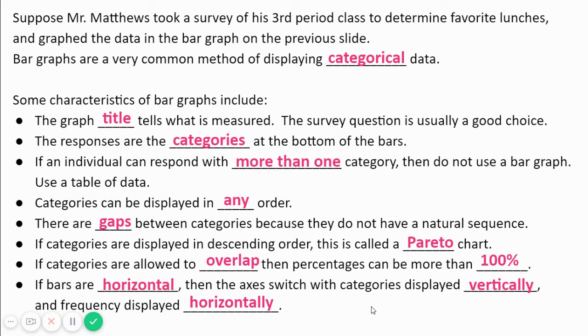If your categories are allowed to overlap, lots of people do it. Sometimes it's appropriate. Usually, there's a better way to present your data. Then your percentages might add to more than a hundred percent. Your bars for your graph could be either horizontal or vertical and then obviously the axes would flip as well.